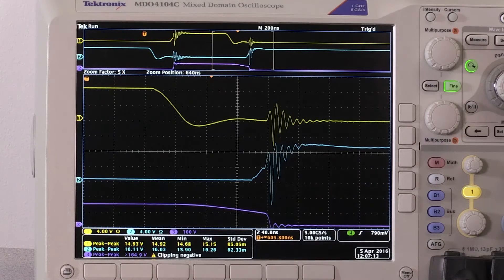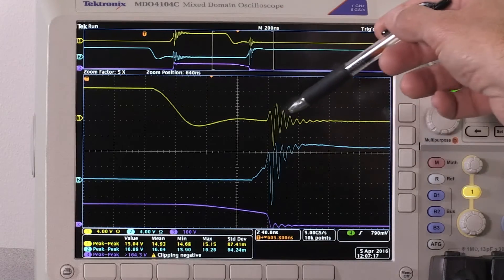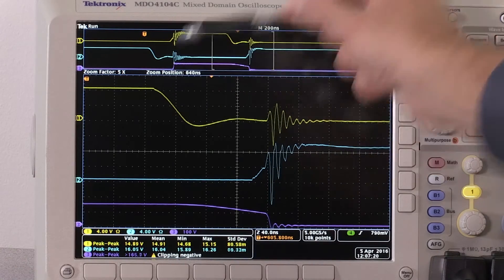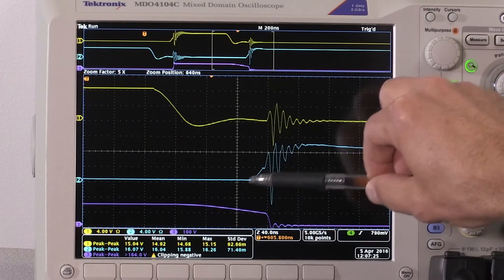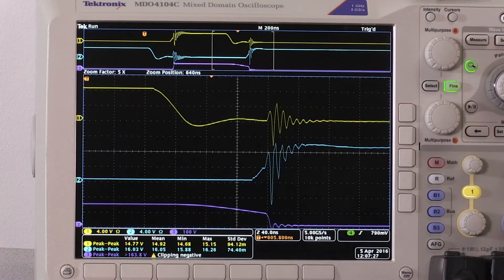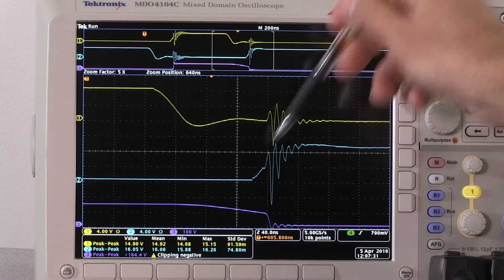So now we're looking at the high-side FET turn-off characteristics. Again the yellow trace is the high-side VGS. You can see it start to turn off here. You can see the low-side FET turning on here. You can see the charging characteristics of the low-side gate. You can see the dead time between the high-side gate turn-off and the low-side gate turn-on.